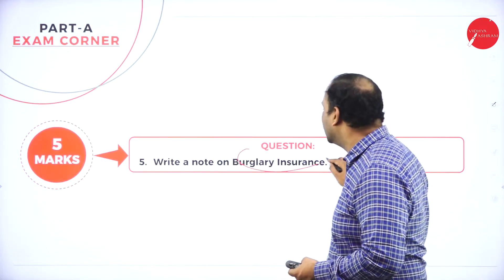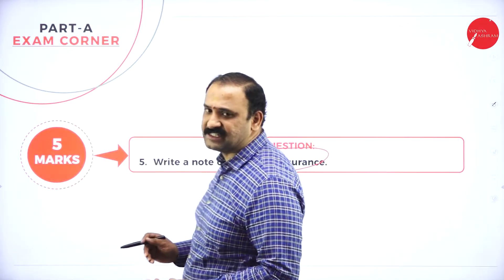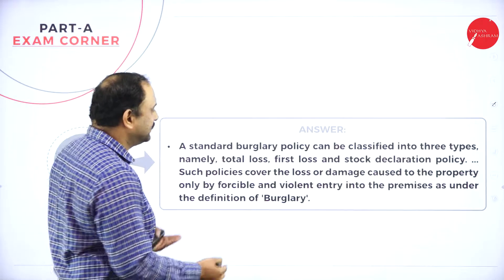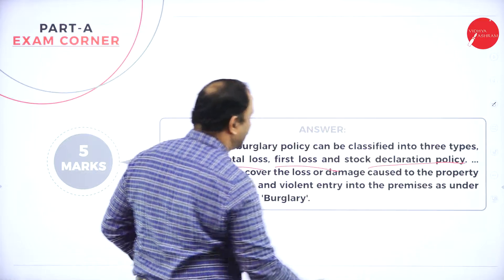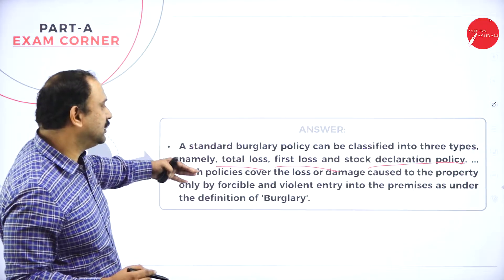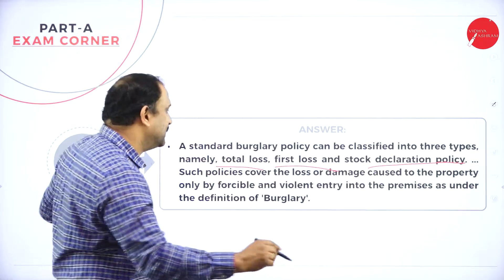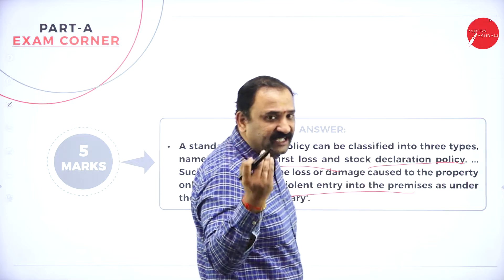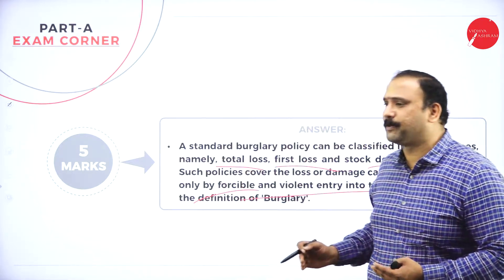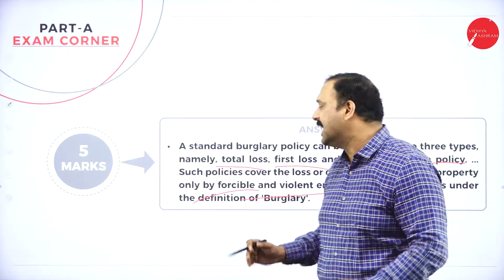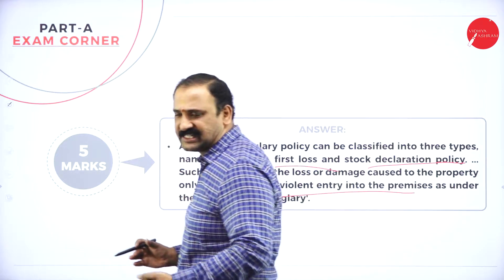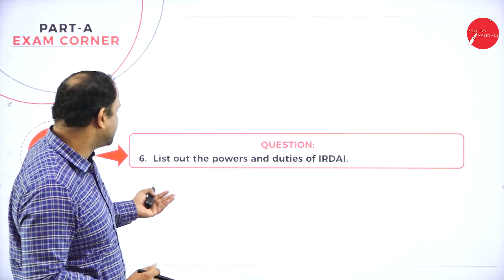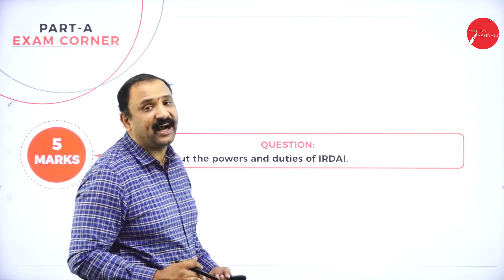The next question is: write a note on burglary insurance. A standard burglary policy can be classified into three types: total loss, first loss, and stock declaration policy. Such policies cover the loss or damage caused to property either by a forcible or violent entry into the premises. For example, if a thief breaks into your home, makes any damage to your property, or makes a forced entry and tries to take away your property or asset, any kind of damage will be covered under the standard burglary policy.